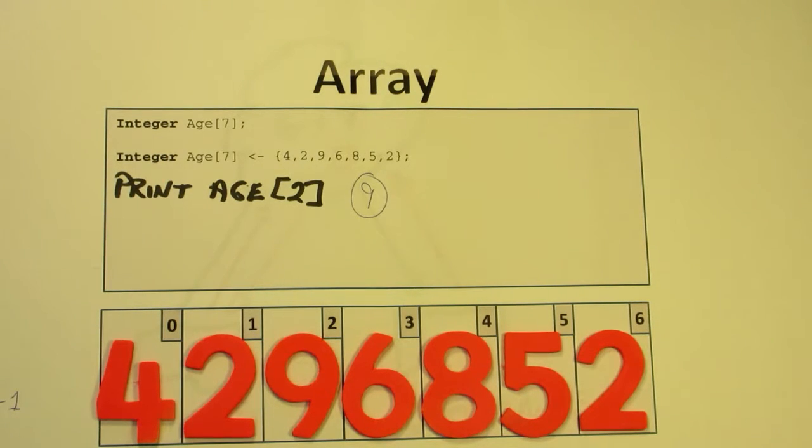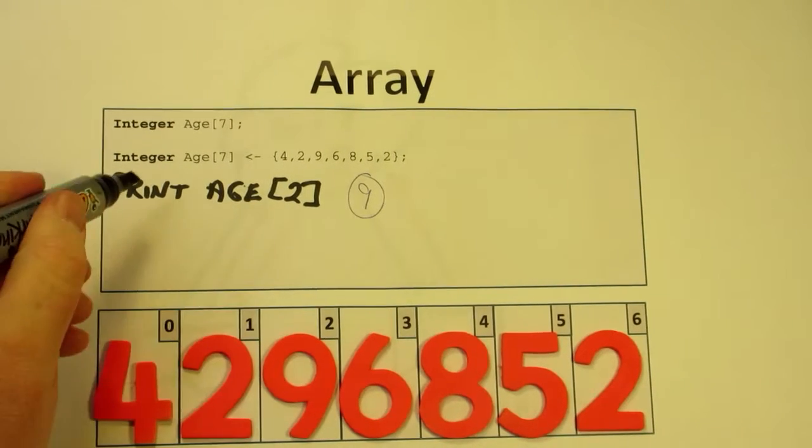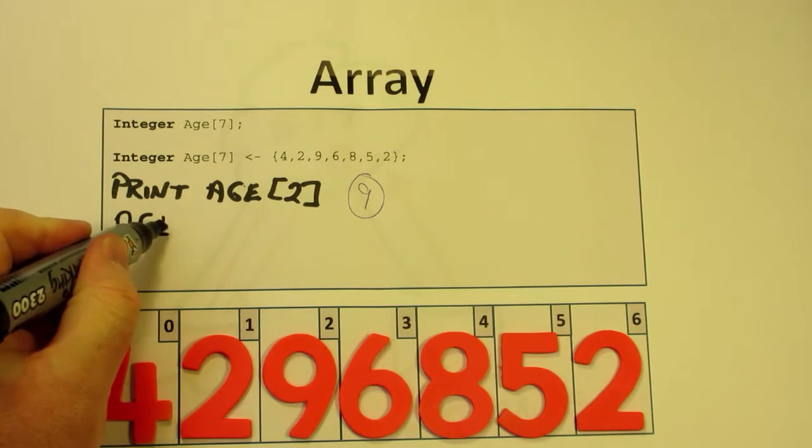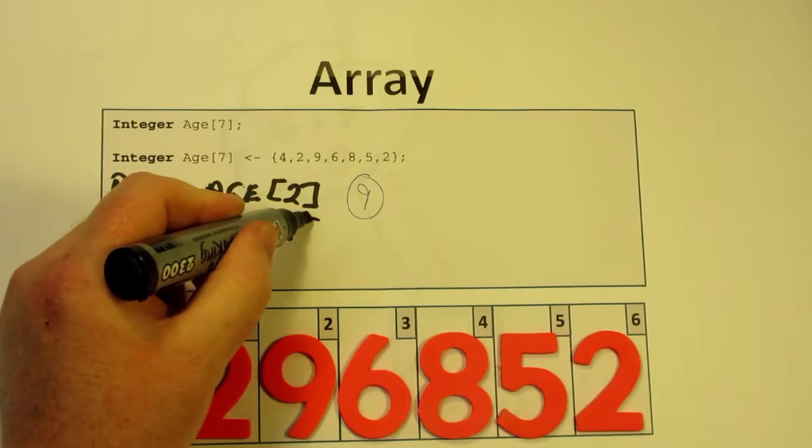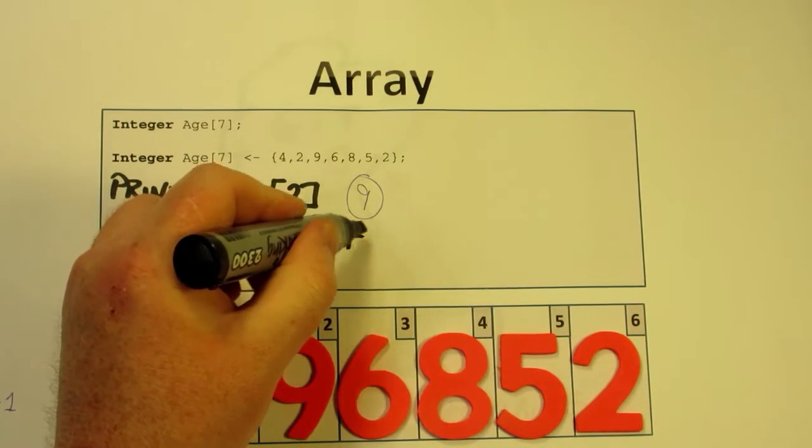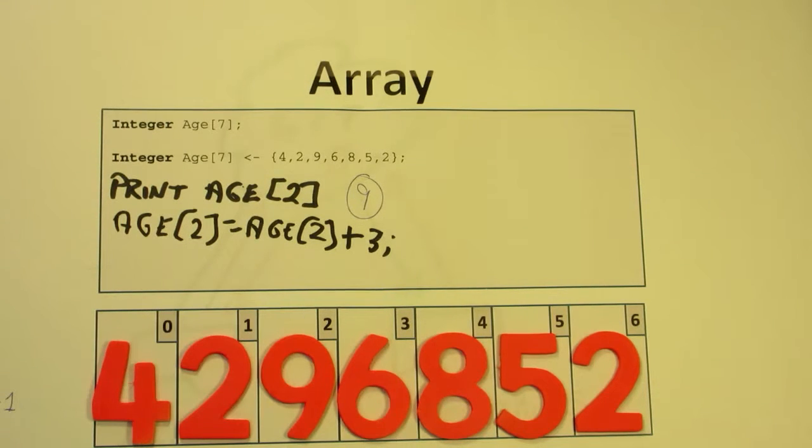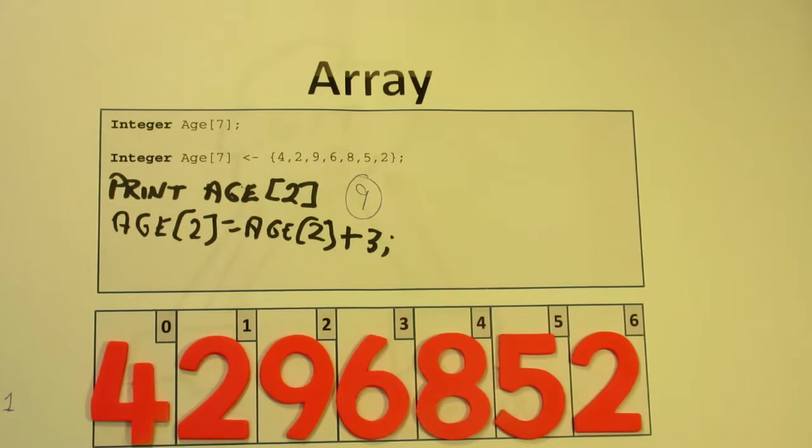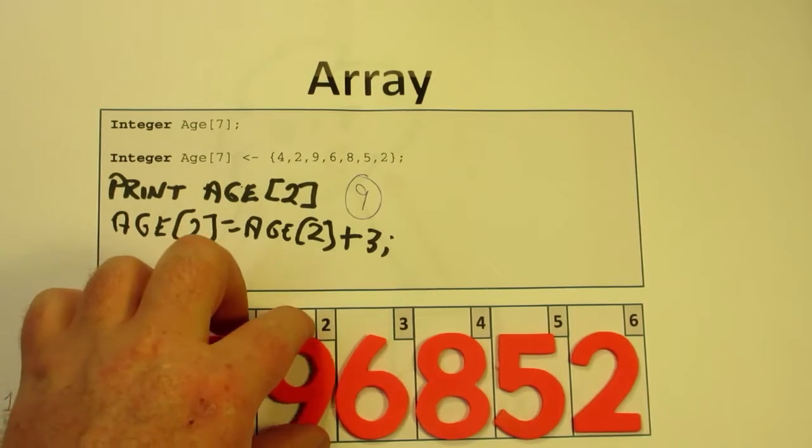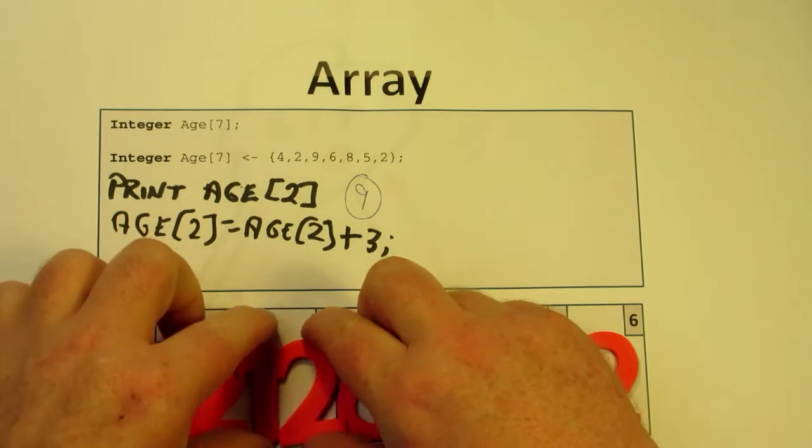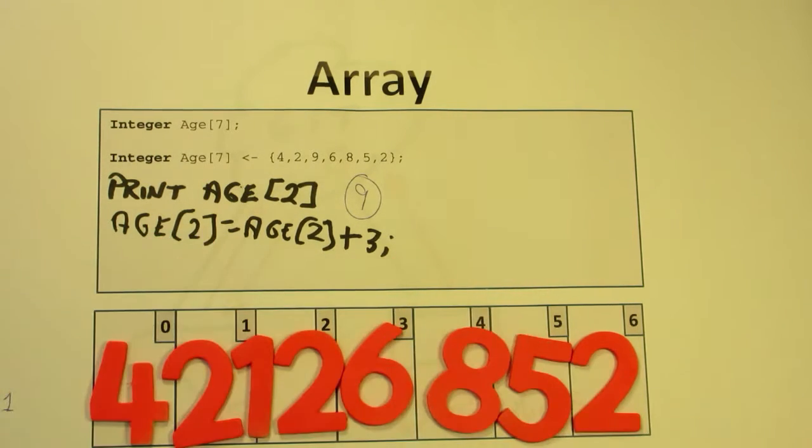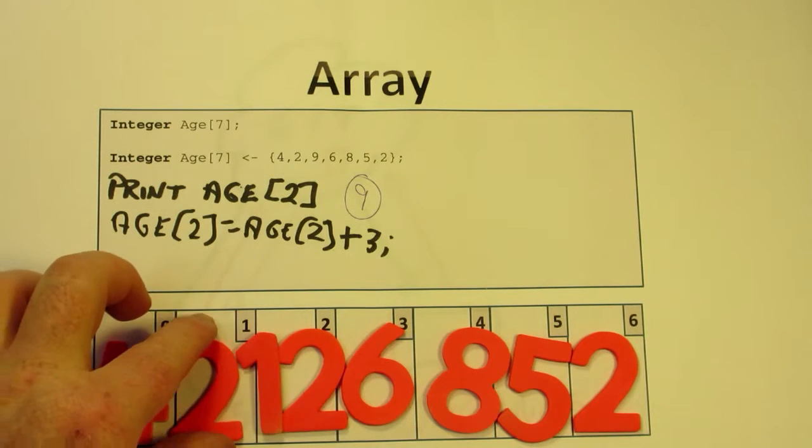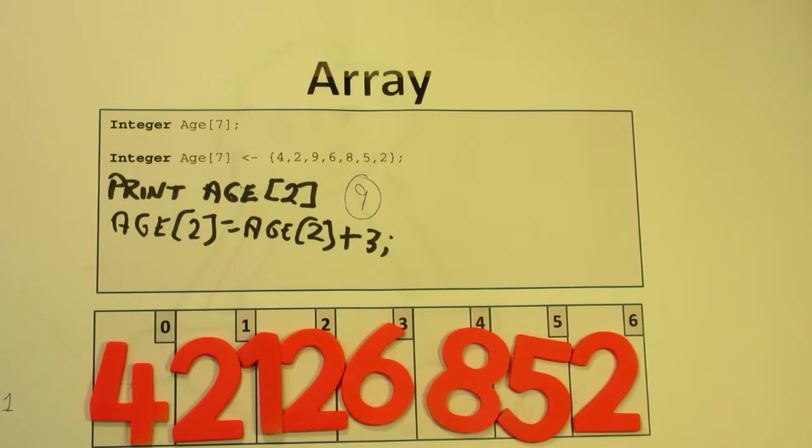If I say something like Age[2] gets the value of Age[2] plus 3, well, Age[2] at the moment is 9. So if we add 3 onto 9, we're going to replace the number 9 here with 12. So now Age[2], the third element of the list, becomes 12. As you can see there, it just adjusts a little bit - exactly the same as we would do with any normal kind of variable.